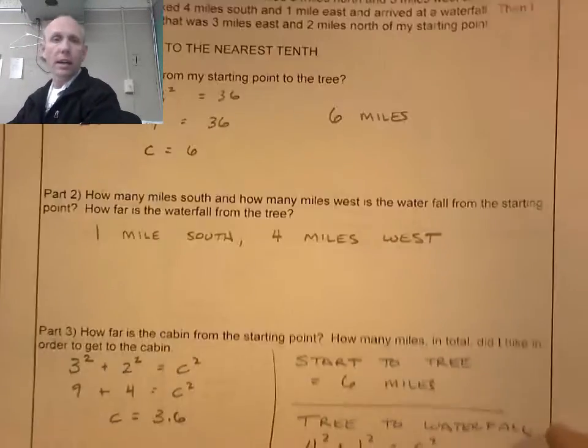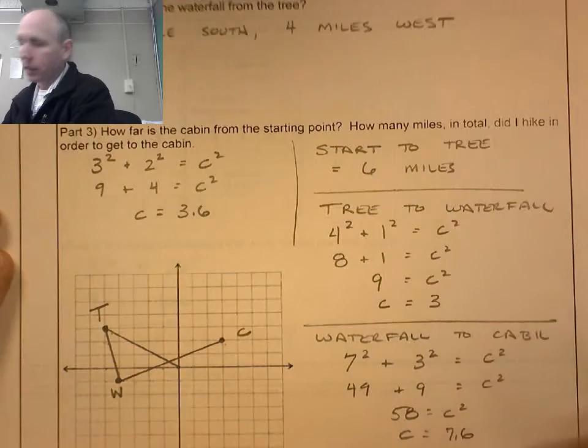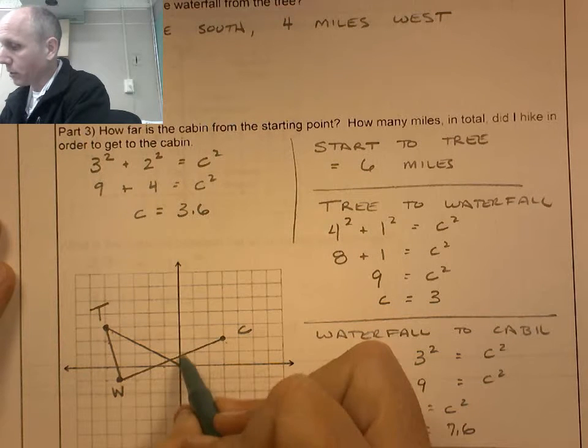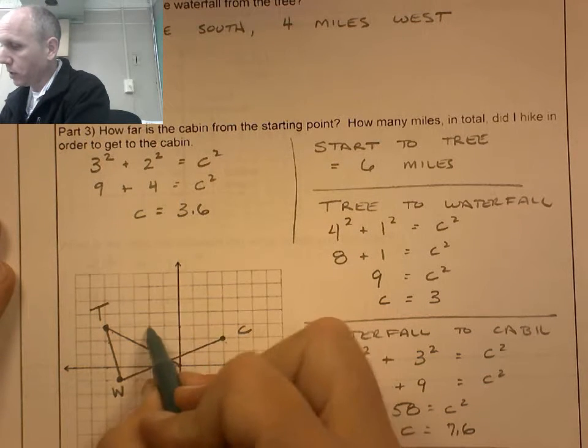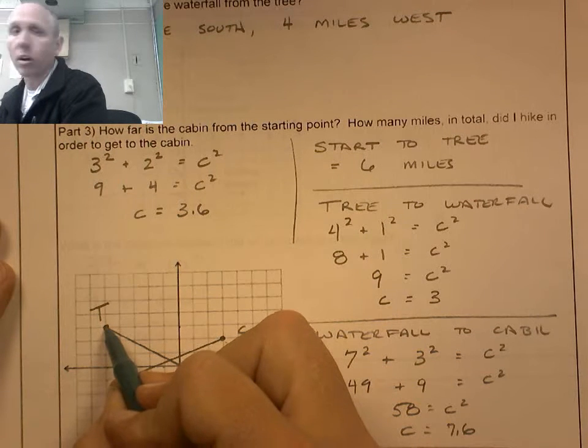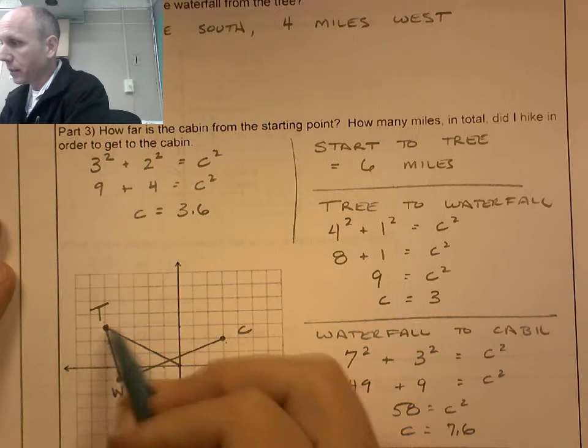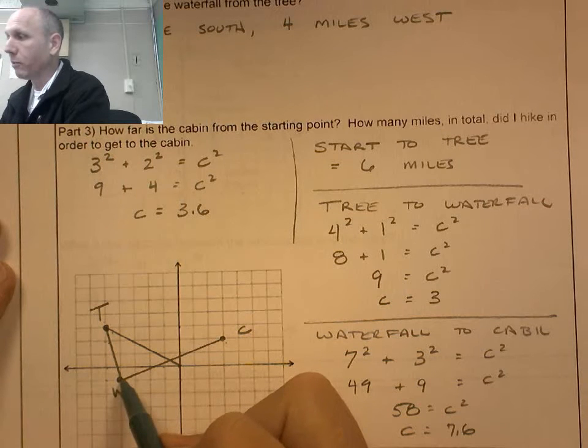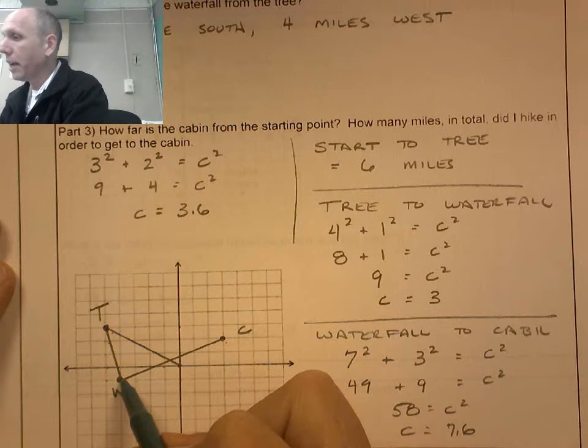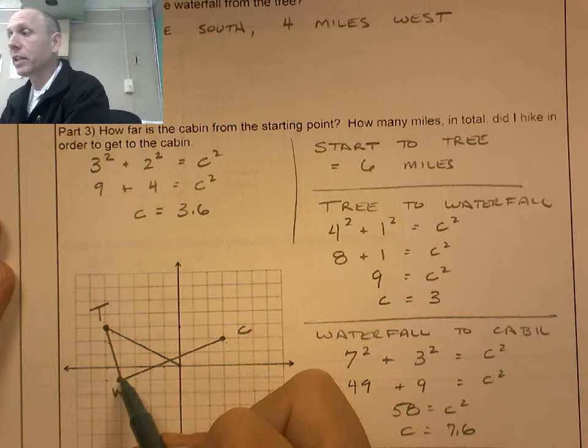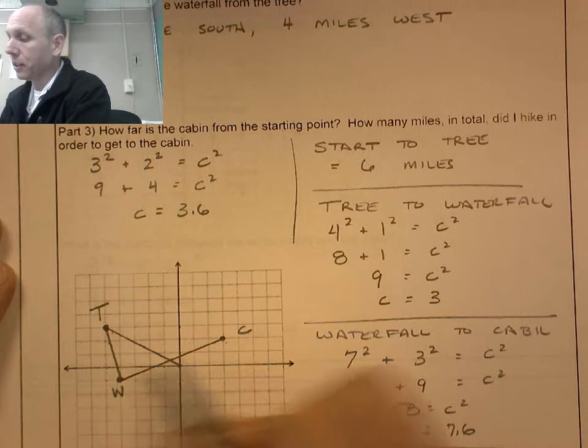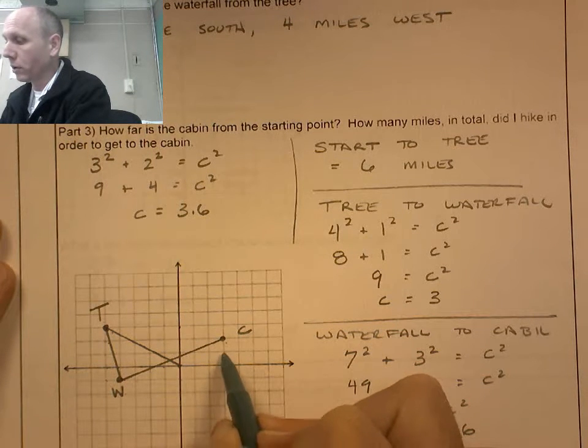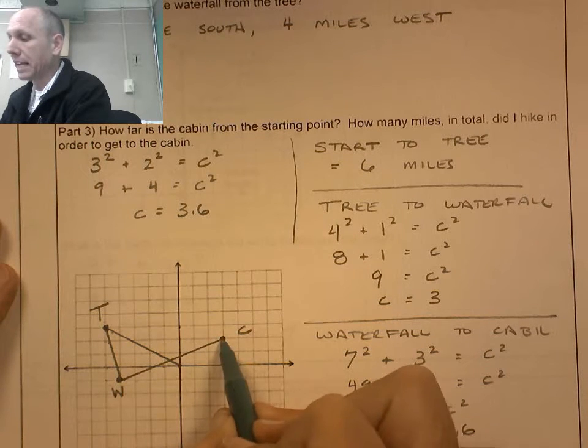One day I decided to go for a hike. I'm going to use this graph paper to explain what's happening here. I hiked 3 miles north and 5 miles west. 1, 2, 3 north, 1, 2, 3, 4, 5 miles west, and I came to a large tree. Next, I hiked 4 miles south and 1 mile east. 4 miles south, 1 mile east, and I came to a waterfall. Then I hiked to a log cabin that was 3 miles east and 2 miles north of my starting point. The cabin is 3 miles east, 1, 2, 3, and 2 miles north, 1, 2. There's the cabin from my starting point.